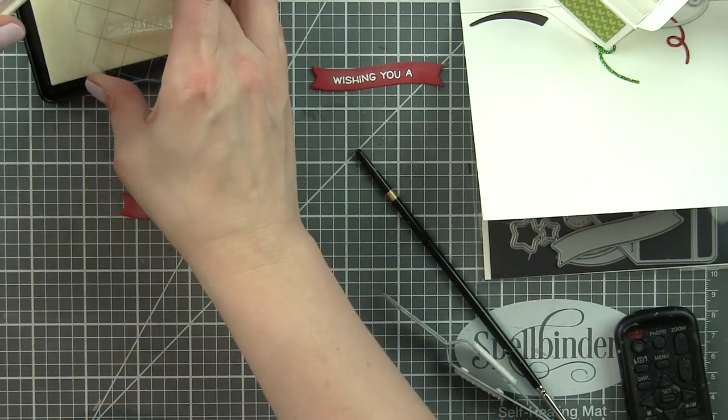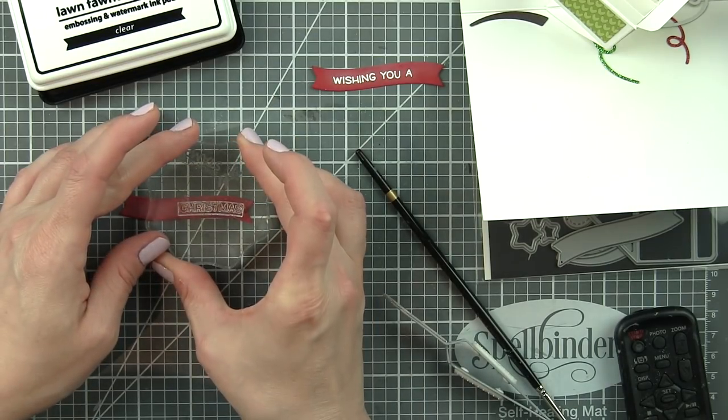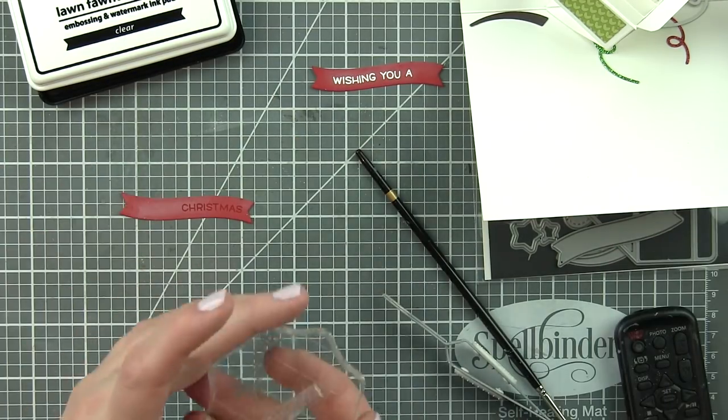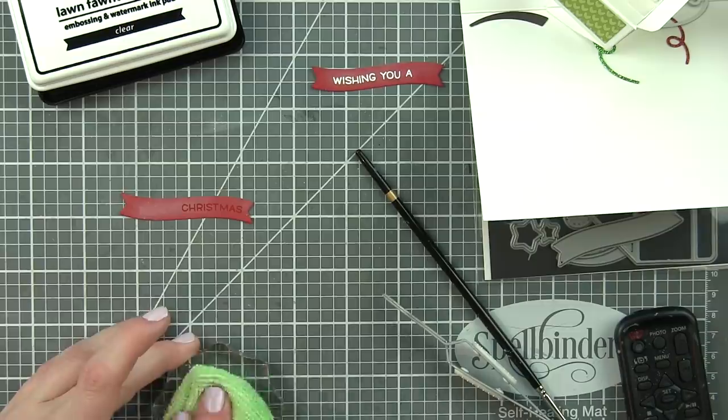I flip my banners over using acrylic block to kind of line them up. It works perfectly. Then flip the banner back over to the right side and start stamping.